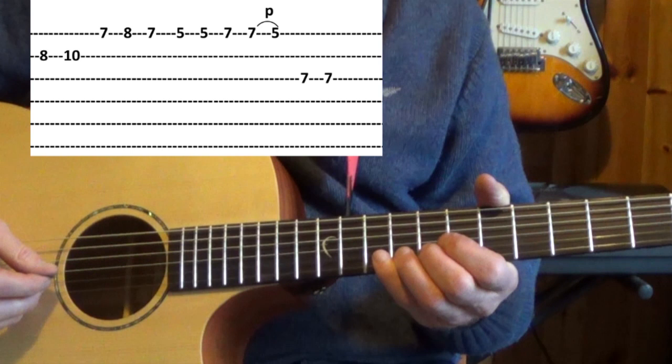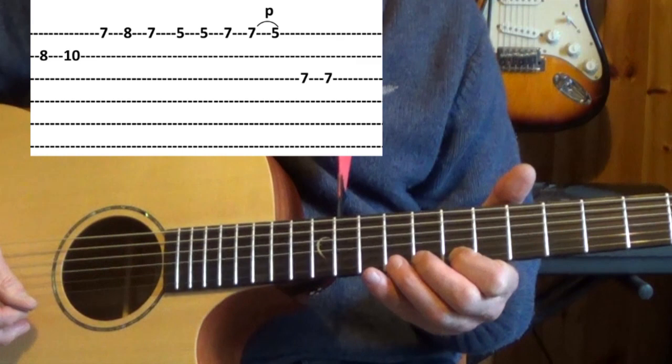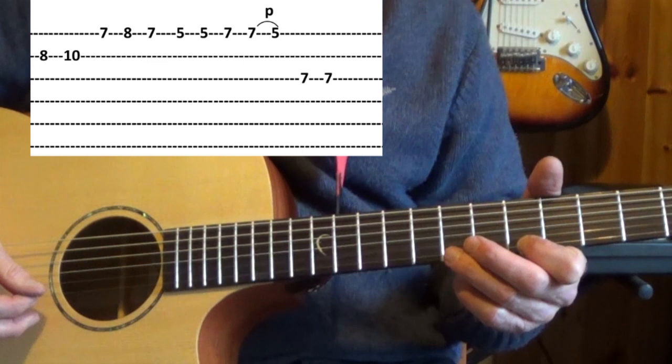Next we play eighth fret on the second string back to the tenth, seventh, seventh, eighth, seventh fret on the first string. Now we're going to move my first finger down on the first string to the fifth fret, play that two times followed by the seventh fret.